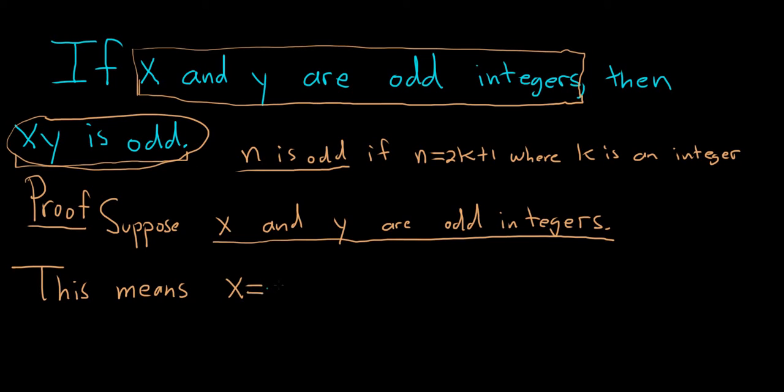x equals, I'll use m, so 2m plus 1, and y equals, I'll use n, 2n plus 1, where m, n are integers.